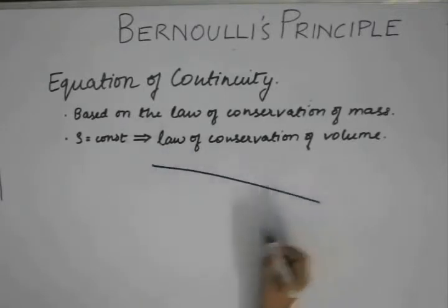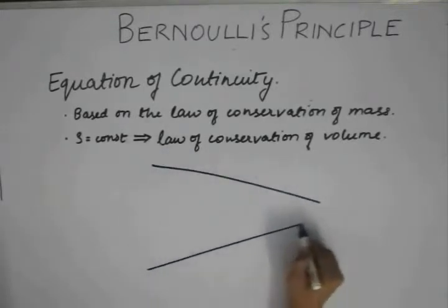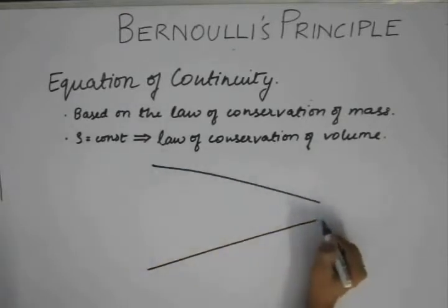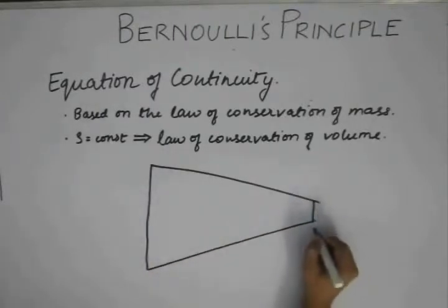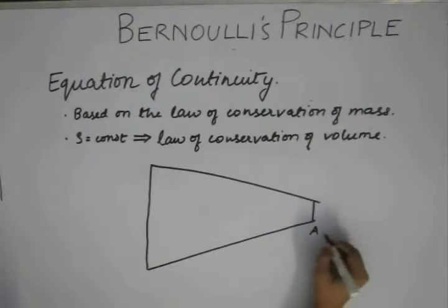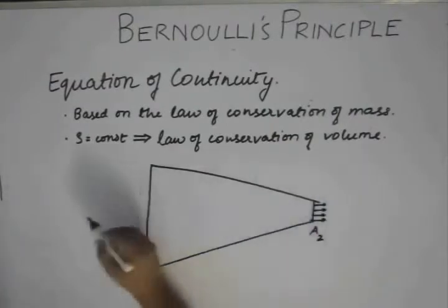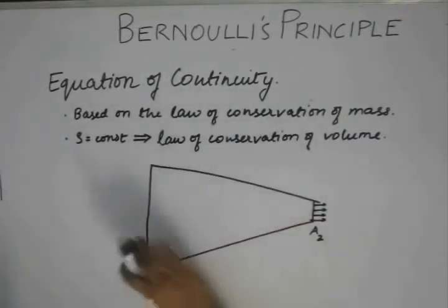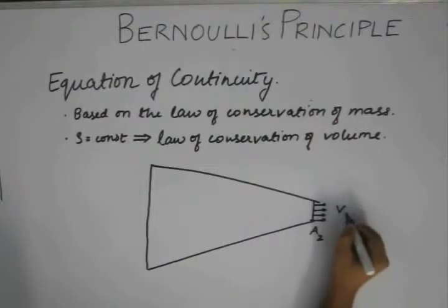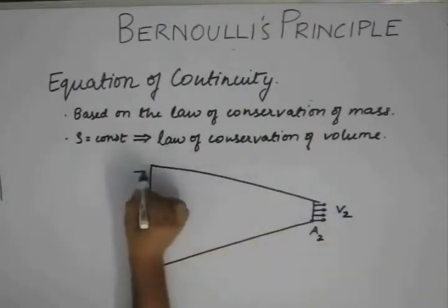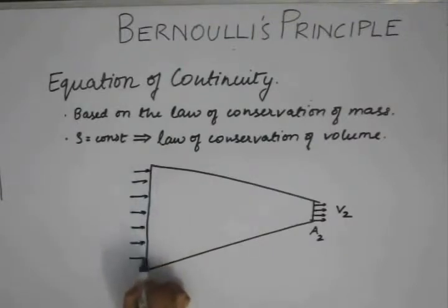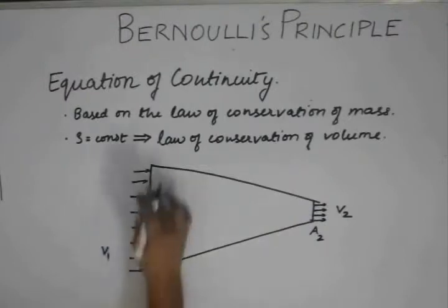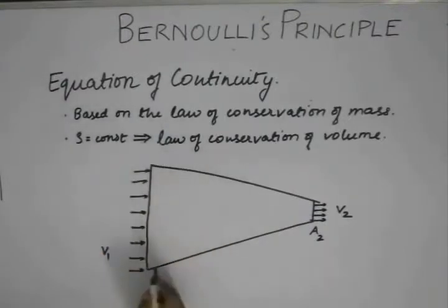Let's say we have a pipe or a duct whose area of cross-section decreases. The area of cross-section at the exit is a2, and the fluid exiting has a velocity of v2. The fluid entering has a velocity of v1, and the area of cross-section at the inlet is a1.